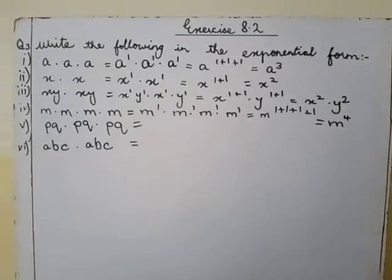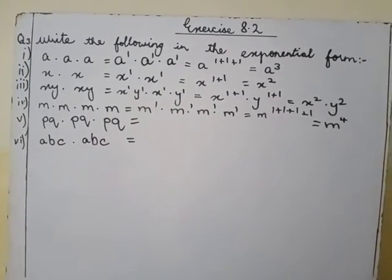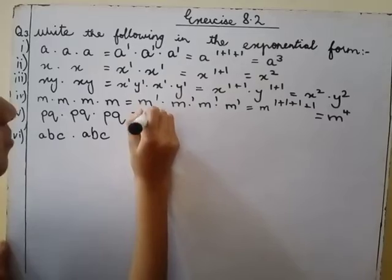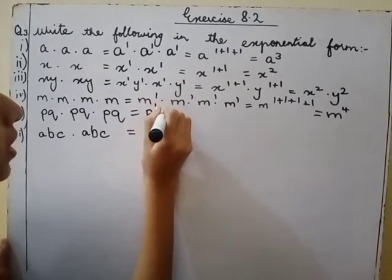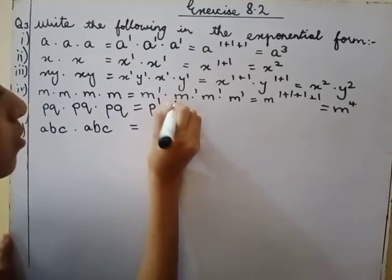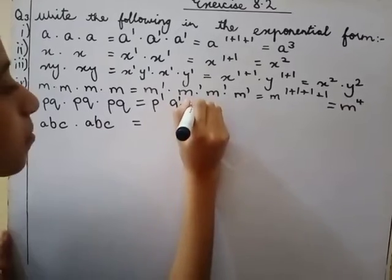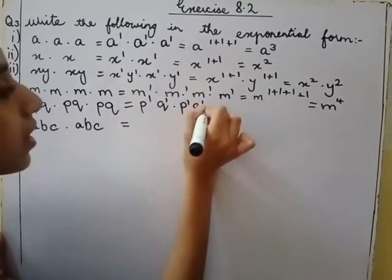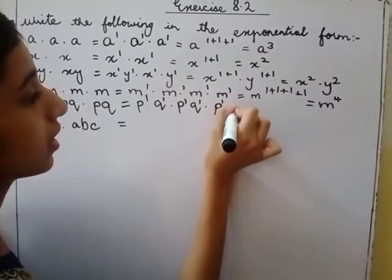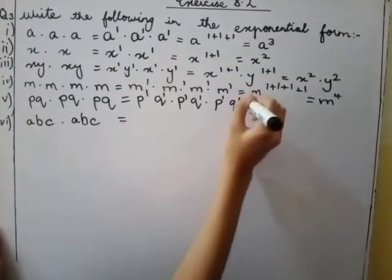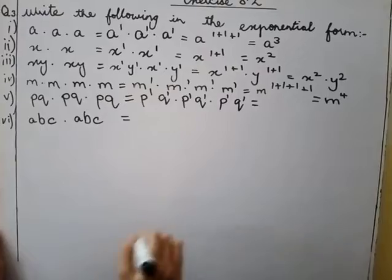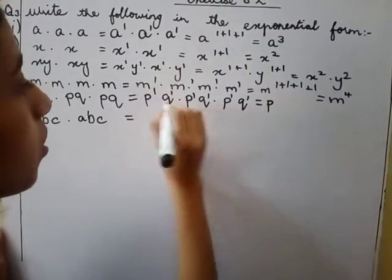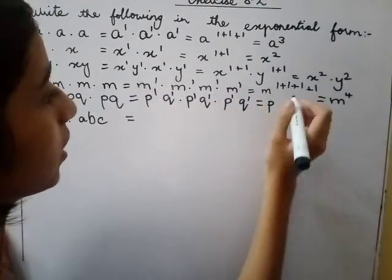So now the fifth part is p one q one, p one q one, p one q one equals to p one plus one plus one, q one plus one plus one equals to p three q three.